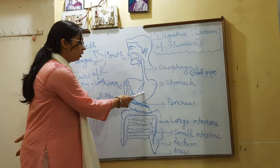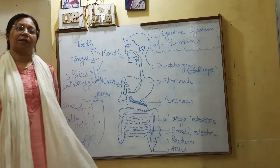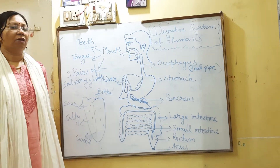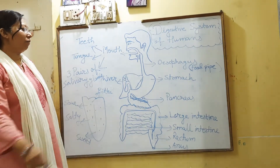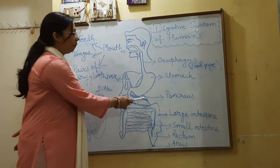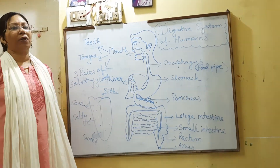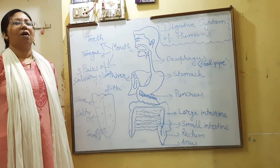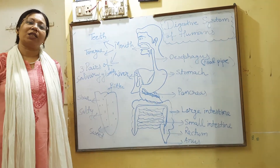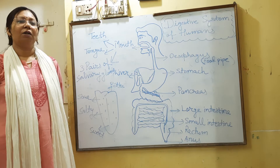After the stomach, the food goes to the small intestine. In the small intestine, food receives digestive juices from the liver and pancreas. The liver and pancreas are two glands found in our body which help in digestion of the food.